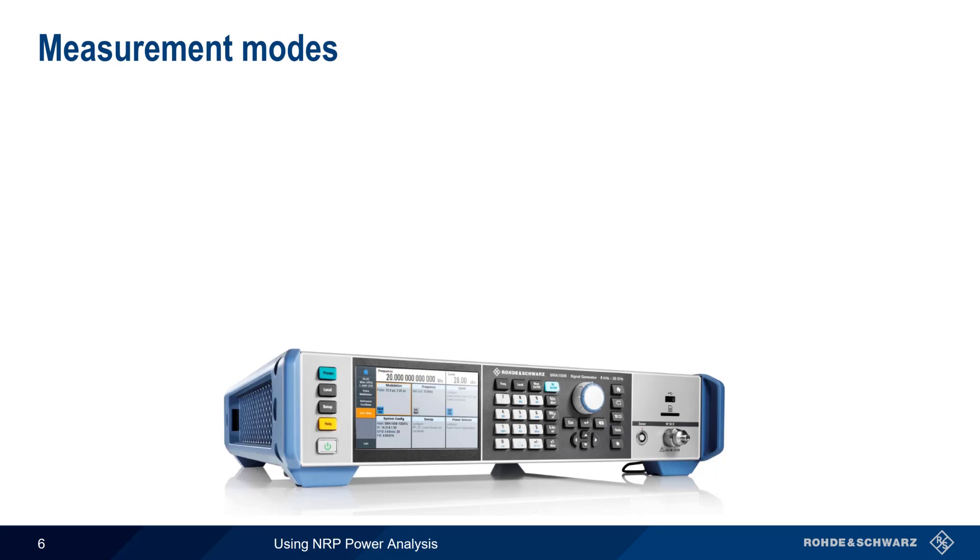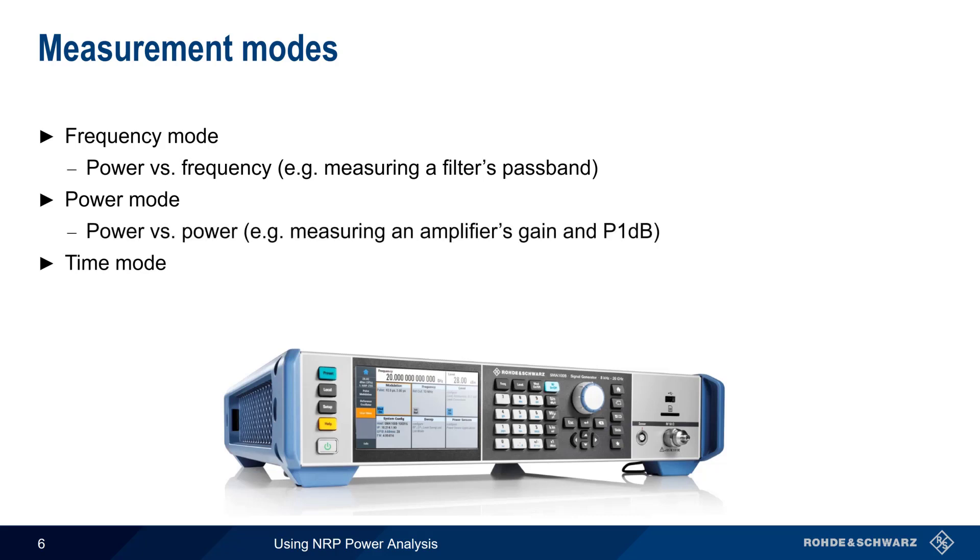As we mentioned earlier, there are three different measurement modes with the NRP-Z power analysis option. These are frequency mode, power mode, and time mode. An example of frequency mode is measuring the passband of a filter. For power mode, measuring the gain and compression point of an amplifier is a common application. And in time mode, we're usually concerned with measurement of pulse signals and their parameters.